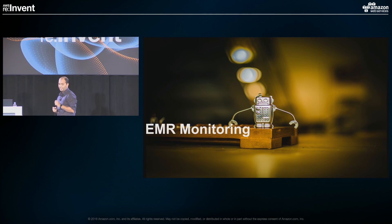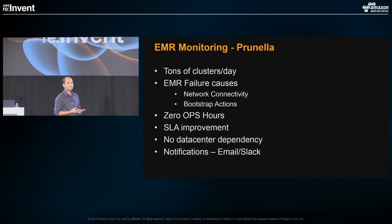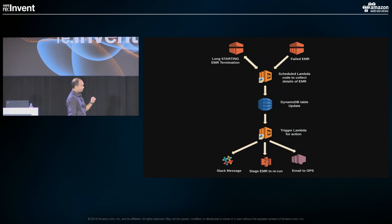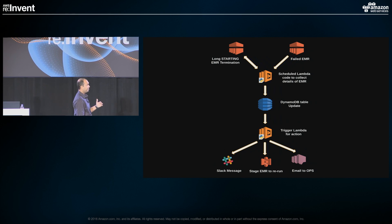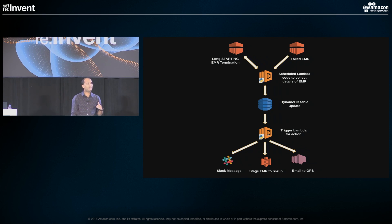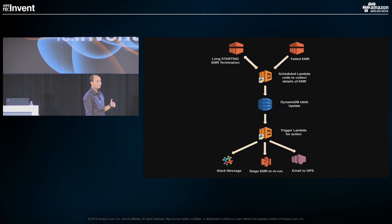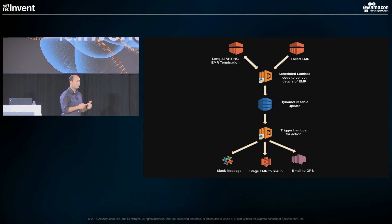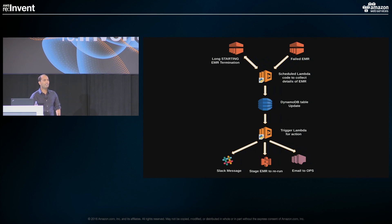Since we have thousands of clusters, we wanted something to handle failures — which can happen due to network issues or spot price changes. We wrote a custom utility called Prunella. Every 10 or 15 minutes, it wakes up and collects data for failed clusters and clusters that have been running long or are stuck in starting state. It writes an entry to DynamoDB, which kicks off a Lambda function that drops a file on S3 for that failed cluster and the whole cycle starts again. A notification is sent to operations. It's a very simple utility using AWS Lambda to take care of all EMR monitoring.